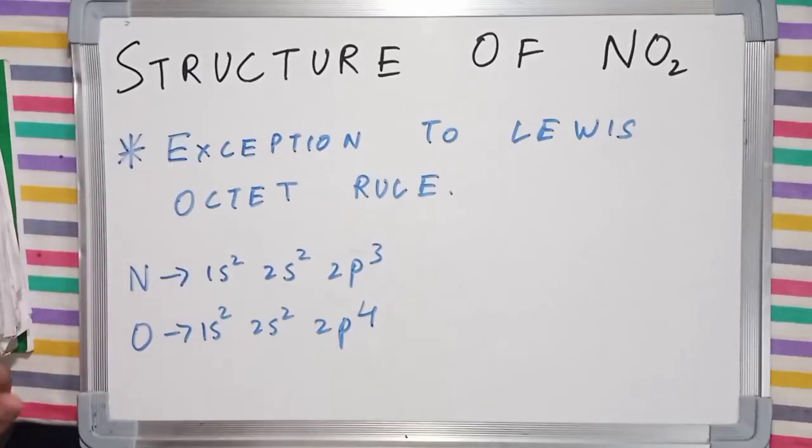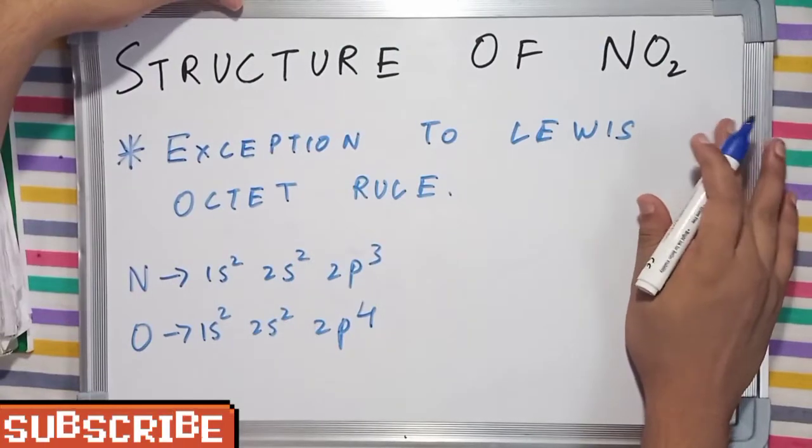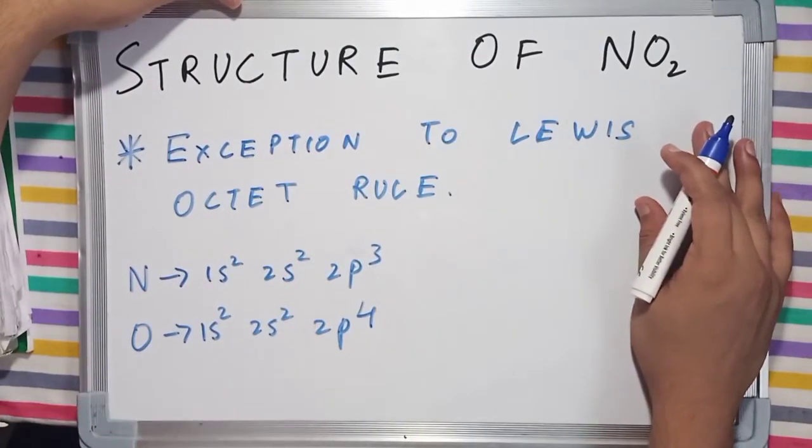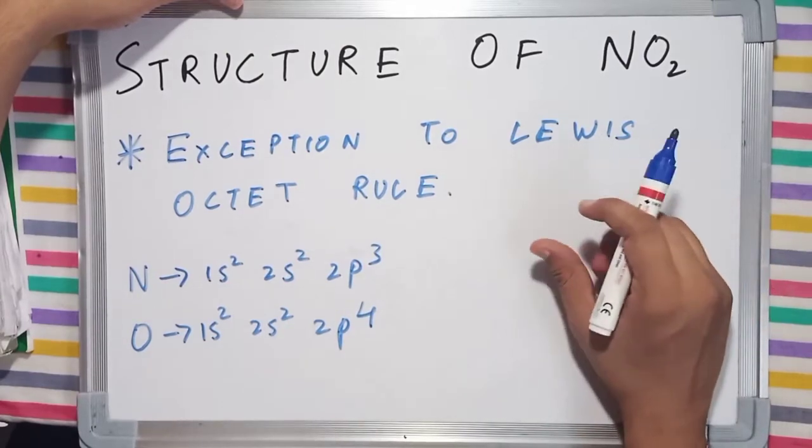We are going to draw the structure of NO2, which is also known as nitrogen dioxide. Before drawing the structure of this particular molecule, I want to emphasize that this particular molecule defies Lewis octet rule.